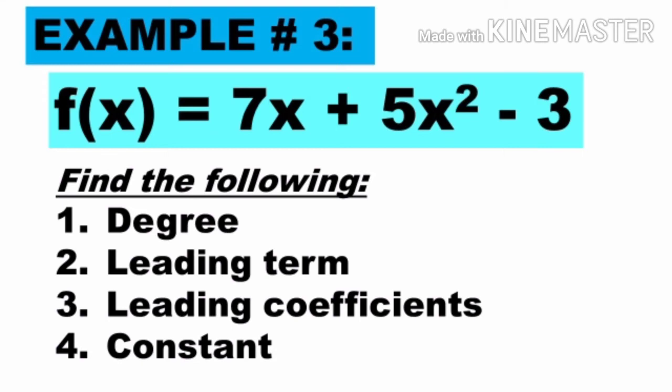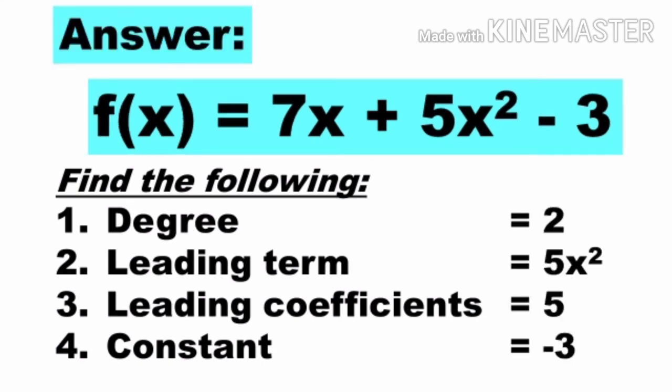Example number 3: f(x) = 7x + 5x² - 3. Kung napapansin ninyo, hindi sya naka-standard form. So paano natin kukunin yung degree, the leading term, the leading coefficient, at constant term ng hindi naka-standard form? The degree — ito yung pinakamataas na exponent na nakikita natin sa function, which is 2. Therefore, the degree is 2. The leading term — yung term na may pinakamataas na exponent, which is 5x². The leading coefficient — ito yung coefficient ng pinakamataas na exponent na term, which is 5. And the constant — ito yung walang kasamang variable, which is negative 3.